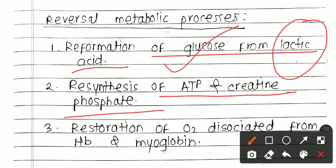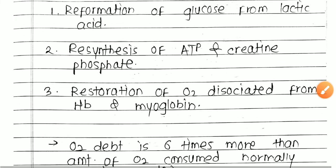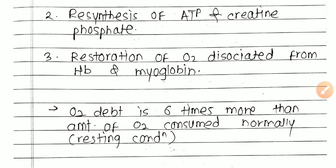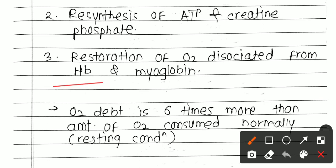Second is resynthesis of ATP and creatine phosphate. During exercise, more ATP is utilized, and you have to resynthesize it. Third is restoration of oxygen dissociated from hemoglobin and myoglobin. During exercise, hemoglobin dissociates and oxygen content decreases in blood. To restore this content, you need more oxygen, which is oxygen debt.